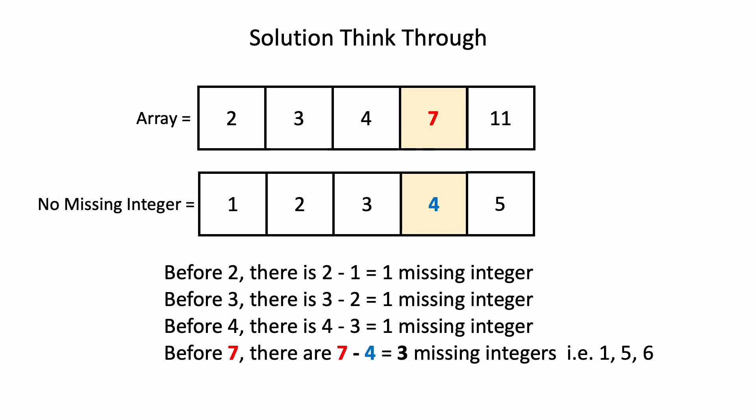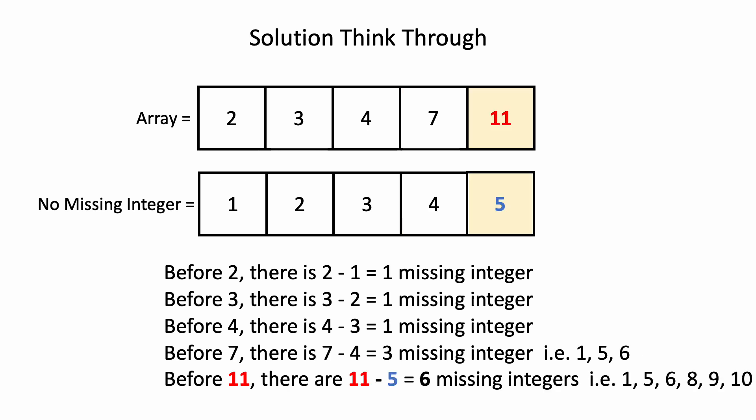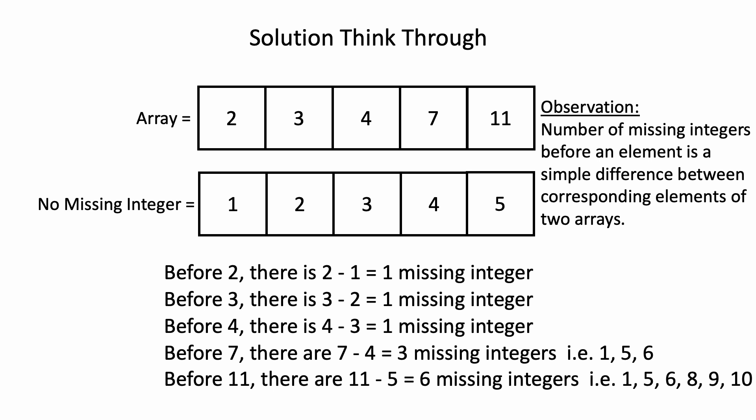Before element 7, there are 3 missing integers: 1, 5, and 6. Before 11, there are 6 missing integers: 1, 5, 6, 8, 9, 10. From comparison of the two arrays, we can draw the observation that the number of missing integers before an element is a simple difference between corresponding elements of the two arrays.